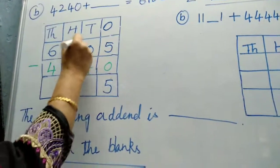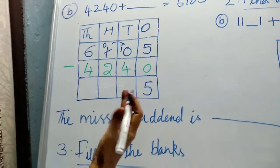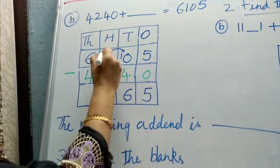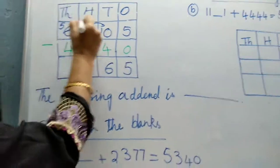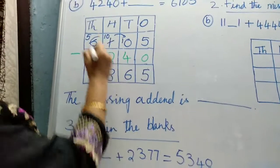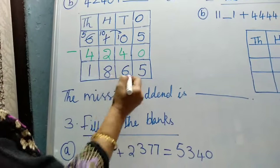0 you bring here, 1 here. 0 from 10, 4 goes 6. 2 cannot go, borrow 1 here. Here 5, from 10, 2 goes 8. And from 5, 4 goes 1. This is your answer.